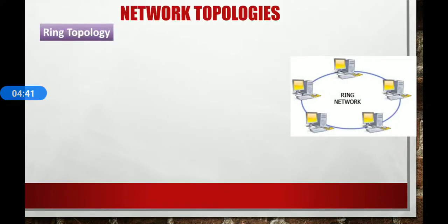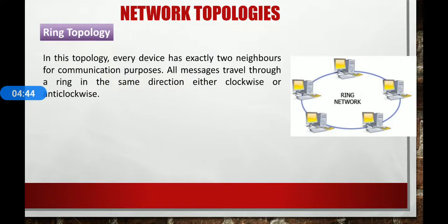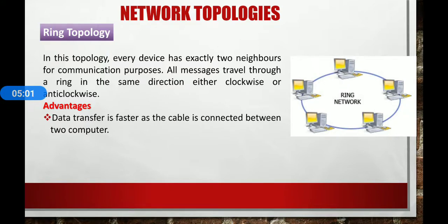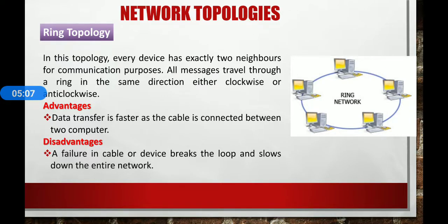Next is ring topology. In ring topology every device has exactly two neighbors for communication purposes. All messages travel through a ring in the same direction, either clockwise or anti-clockwise. An advantage is that data transfer is faster as the cable is connected between two computers. A disadvantage is that a failure in a cable or device breaks the loop or slows down the entire network.